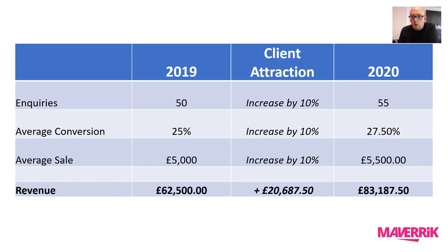Now, if you don't know your conversion rates or how many inquiries you're getting, you're starting at a baseline where you can't tell whether your conversion rate is any good. You have to be able to measure — what you can't measure, you can't manage, and you can't improve. So if you don't know whether you've got 50 inquiries, you need to start tracking them. If you don't know your conversion rate or your average sale value, start tracking those too, because those are the numbers you need to work on improving with a proper, thought-out, rigorous client attraction strategy.